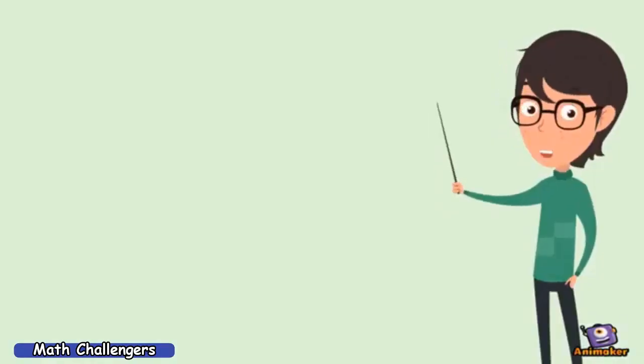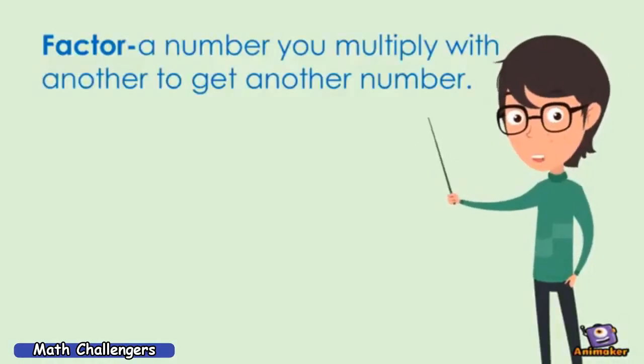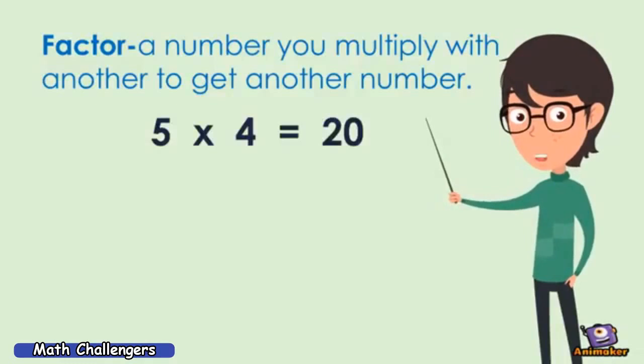Let's now move on to factors. A factor is a number multiplied with another to get another number. 5 times 4 equals 20. 5 and 4 are factors of 20.